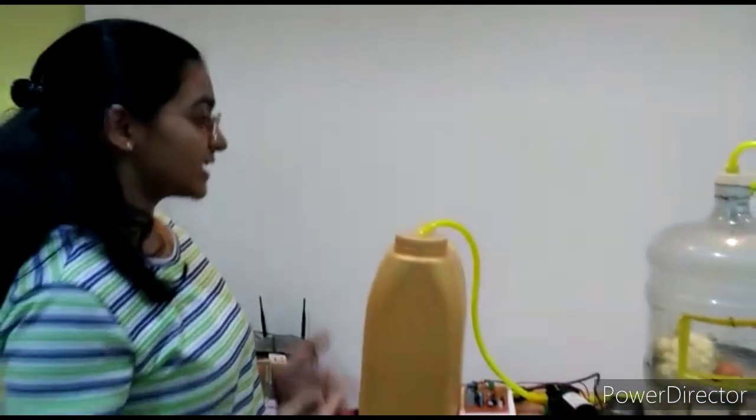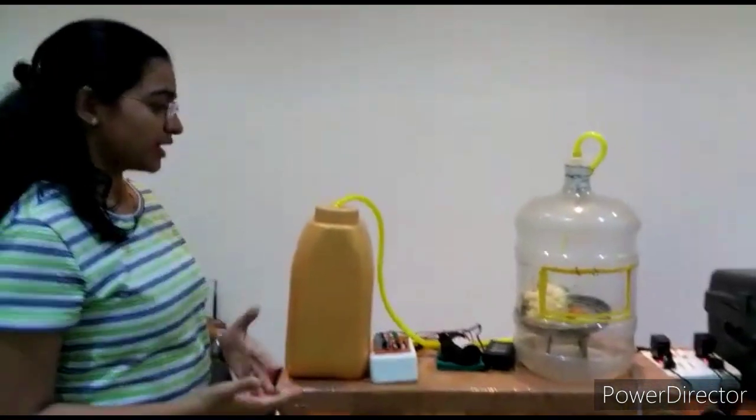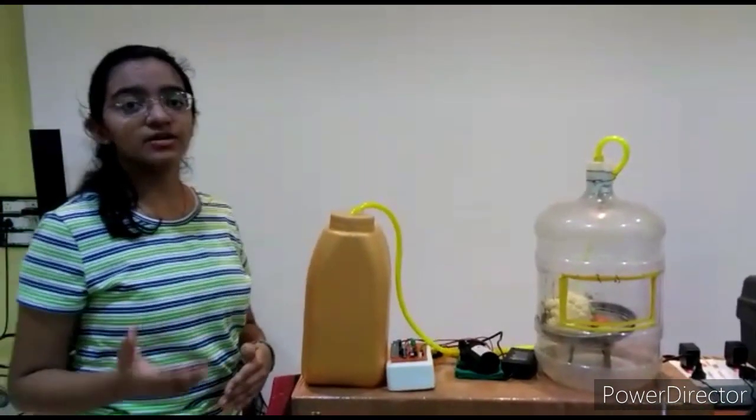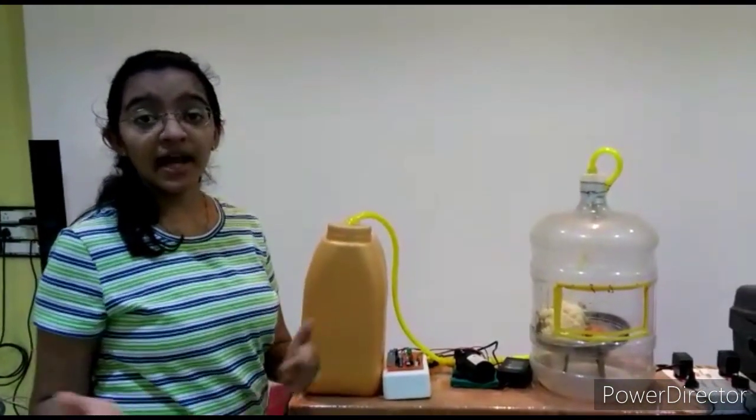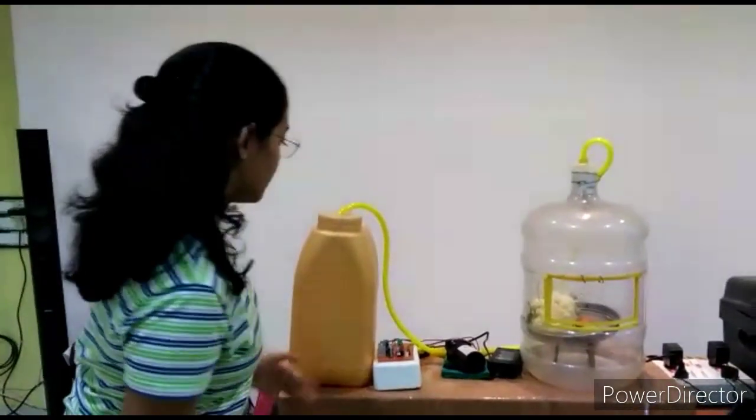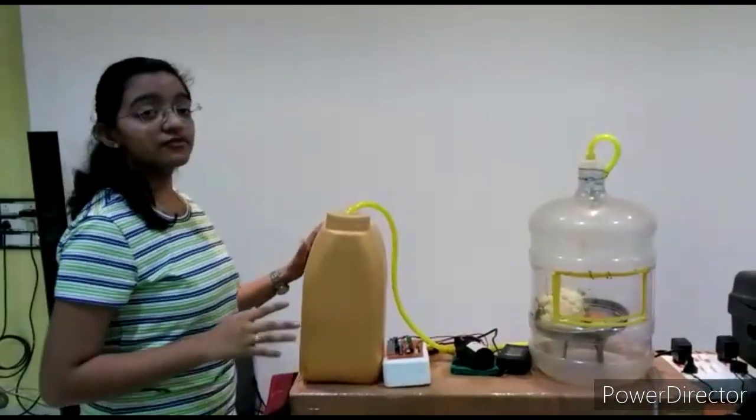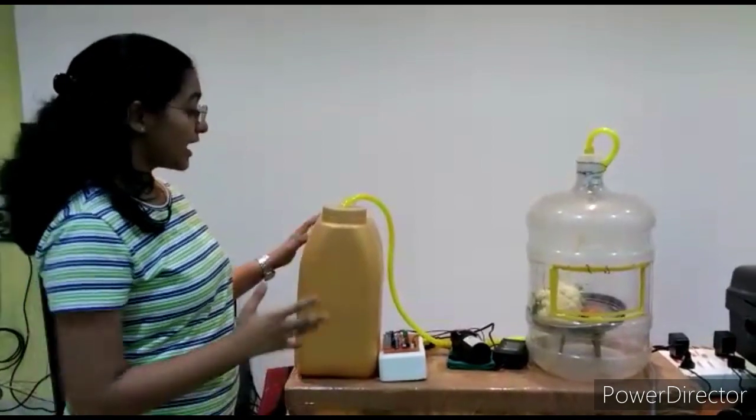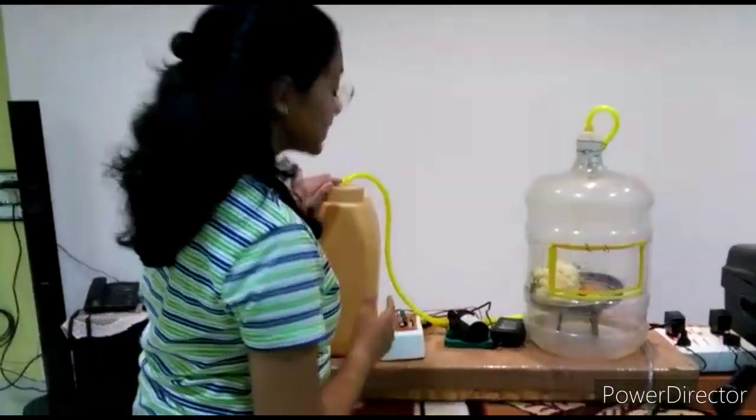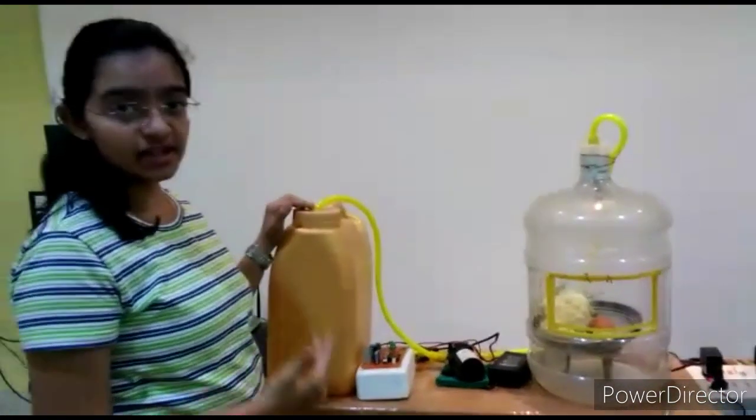Coming to my first gadget, that is the sanitisation machine. This can be easily made using items that are available at home and at local market. As seen in the assembly, I have used a 15-liter oil can as a storage unit for disinfecting solution.